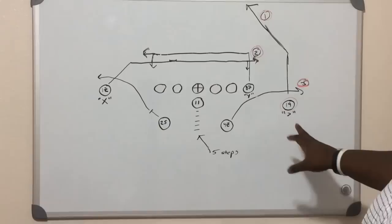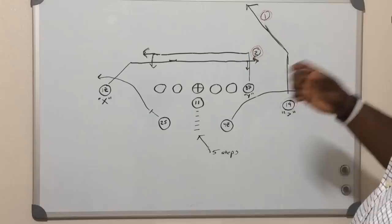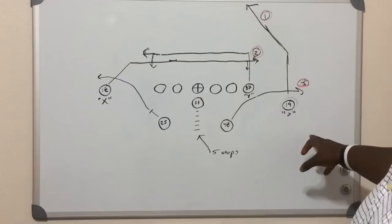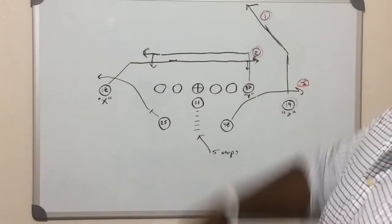On this play there is no motion, although you could, but I haven't drawn it up that way. Instead, he's just the Z, he's lined up off the line of scrimmage, which makes it harder to jam — another reason why this is the spotlight guy. I've just got him running a straight post, and as you can tell, he is the number one option on this route.